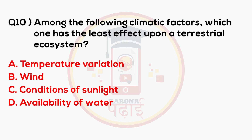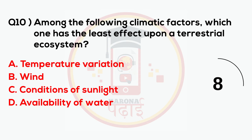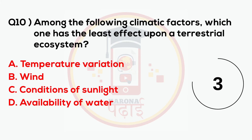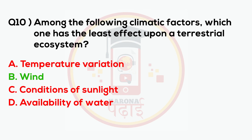Among the following climatic factors, which one has the least effect upon a terrestrial ecosystem? The answer is Wind.